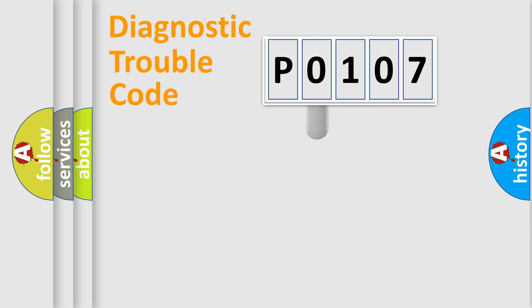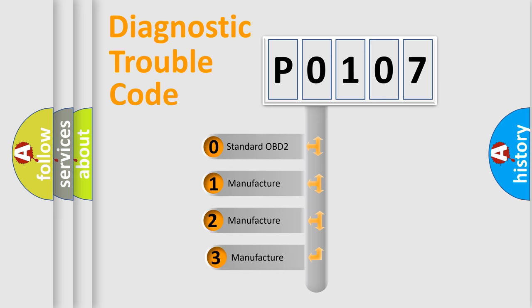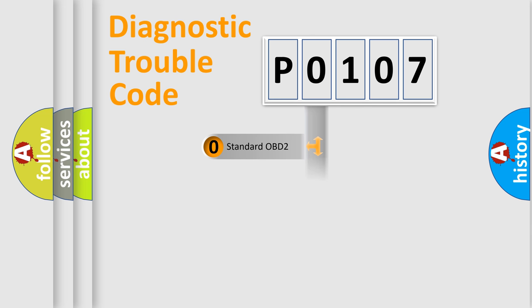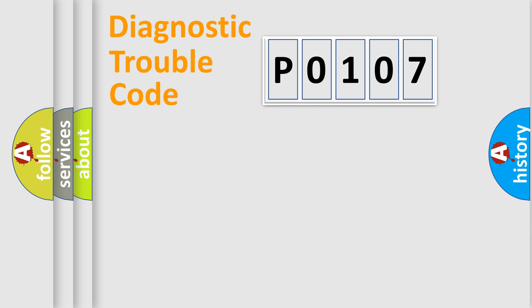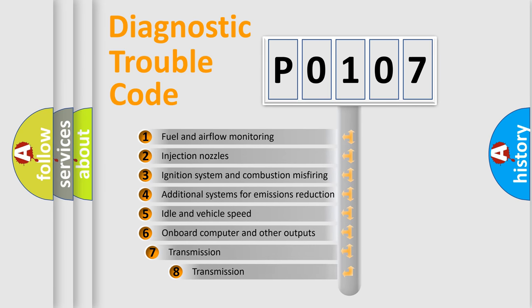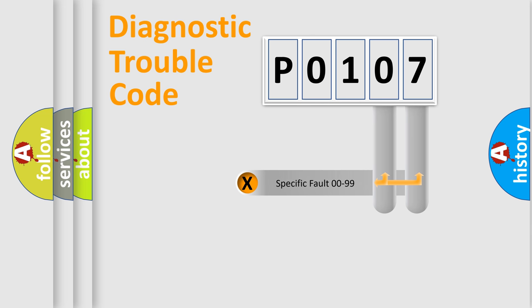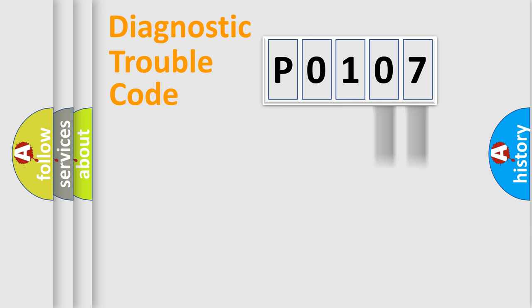This distribution is defined in the first character of the code. If the second character is expressed as zero, it is a standardized error. In the case of numbers 1, 2, or 3, it is a manufacturer-specific error expression. The third character specifies a subset of errors. The distribution shown is valid only for the standardized DTC code. Only the last two characters define the specific fault of the group.